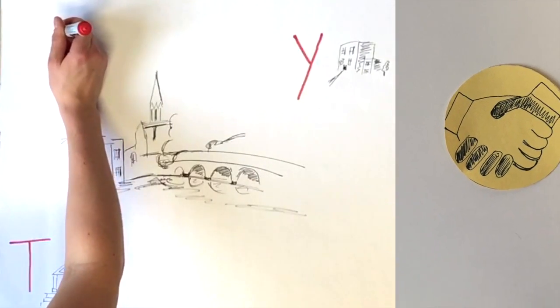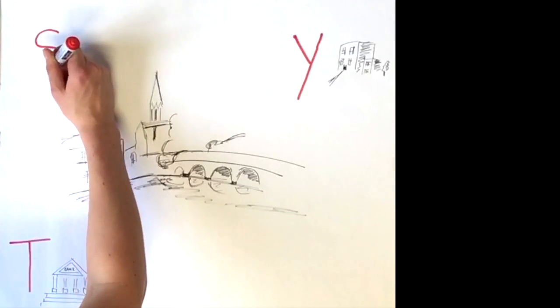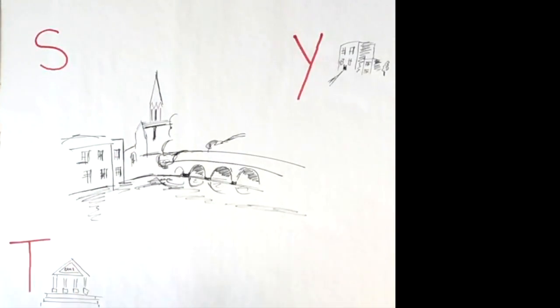Simms, a solicitor, agrees to make that undertaking, and a deal is reached. But here is where things start to go wrong.